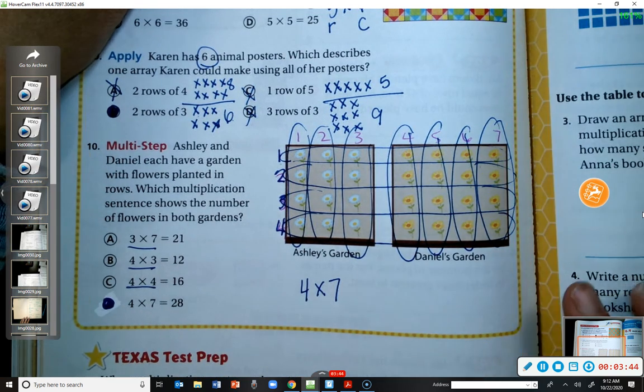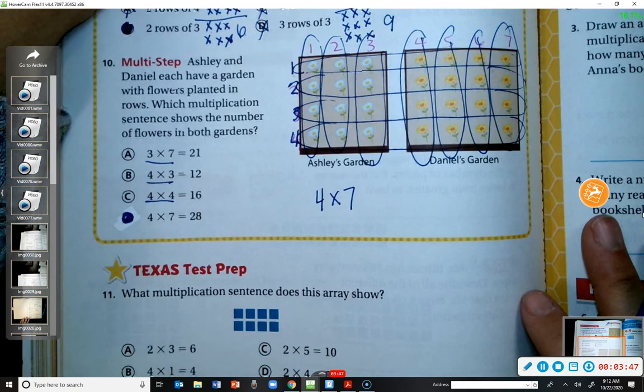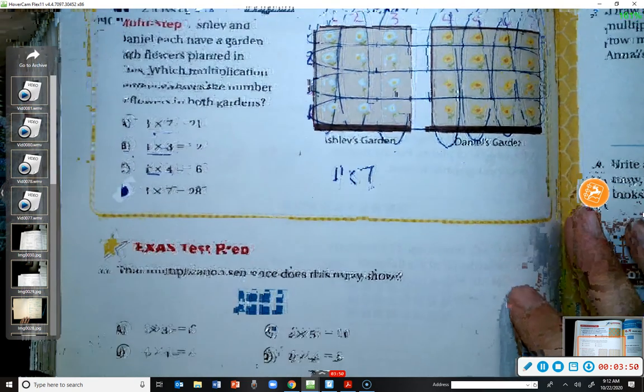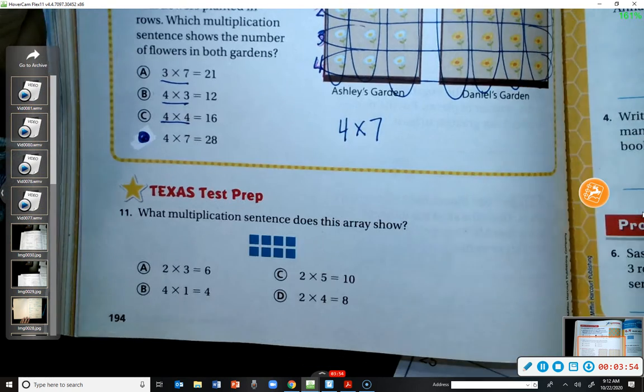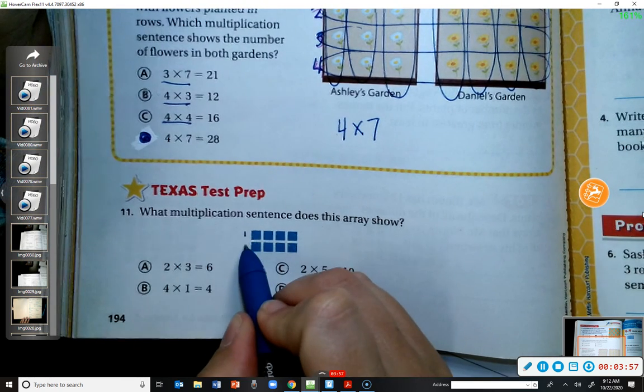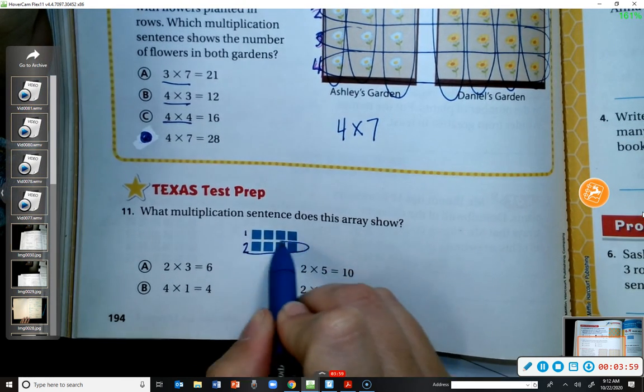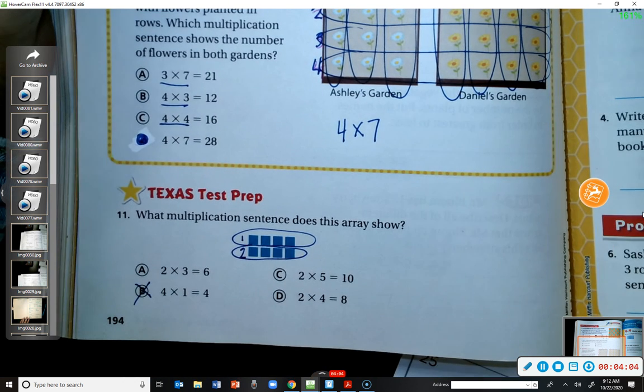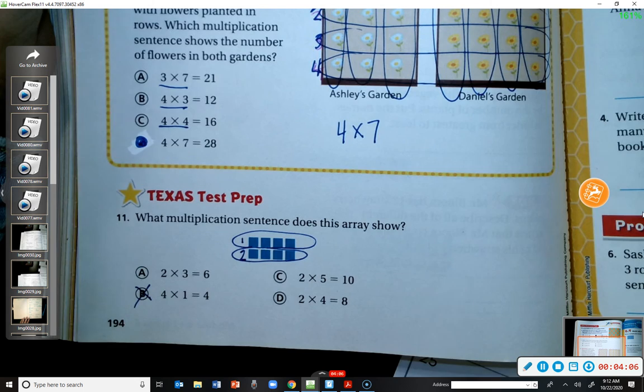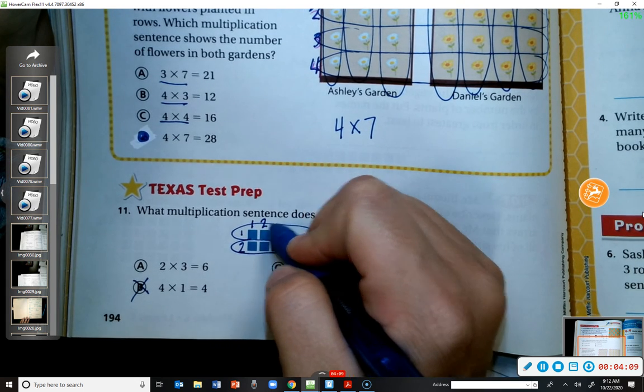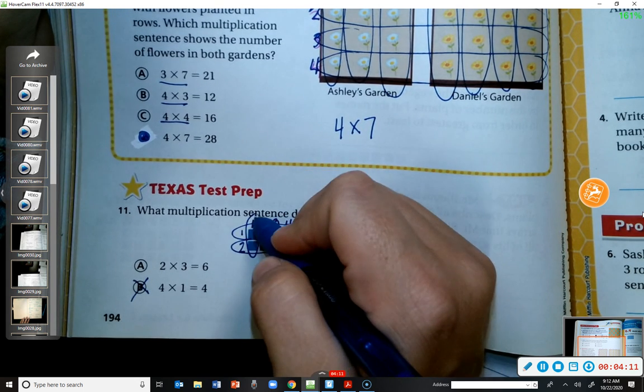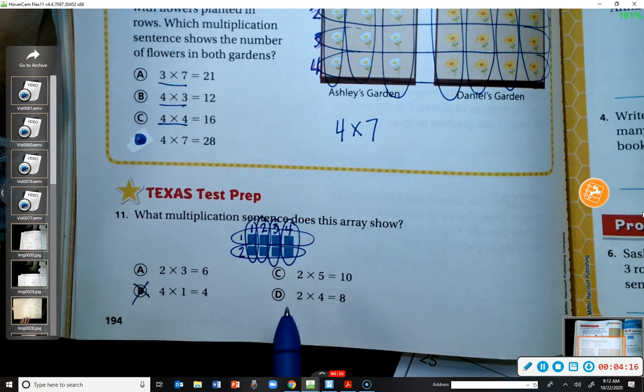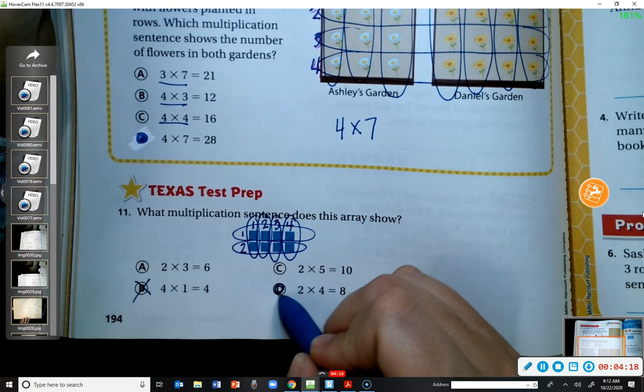Okay. Number 11. What multiplication sentence does this array show? I have to count one, two. So two rows. So now I know I can automatically eliminate B. It doesn't have a two in it. And then I count the columns. So one, two, three, four. One, two, three, four. Two times four. So D is the correct answer.